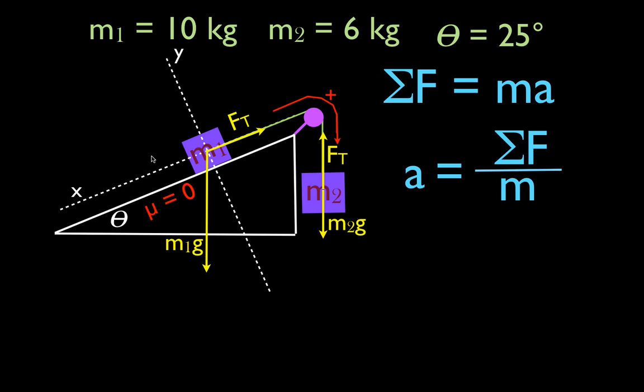M1 is not falling through the inclined plane, so there must be a normal force. The normal force acts perpendicular to the surface of the inclined plane, drawn along the positive y-axis.